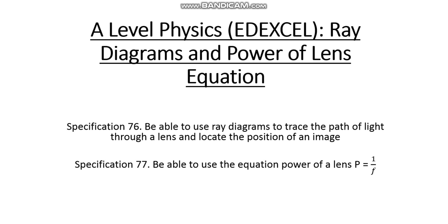Hello, and in this video we will be going over A-level physics, specifically for AQA/Edexcel. We'll take a look at ray diagrams and the power of the lens equation. Specification point 76 states that we need to be able to use ray diagrams to trace the path of light through a lens and locate the position of an image. Specification point 77 states that we need to be able to use the equation for the power of the lens, which is given as 1 over the focal length.